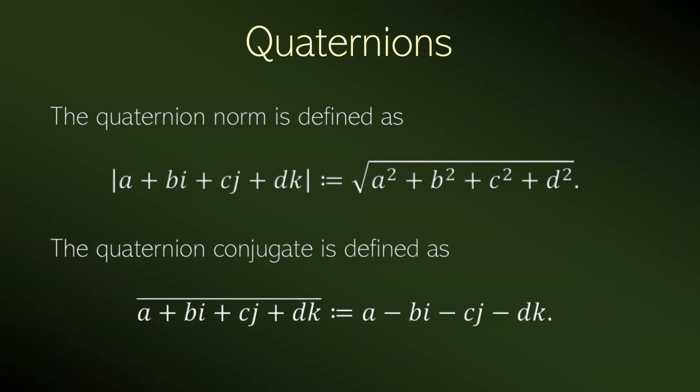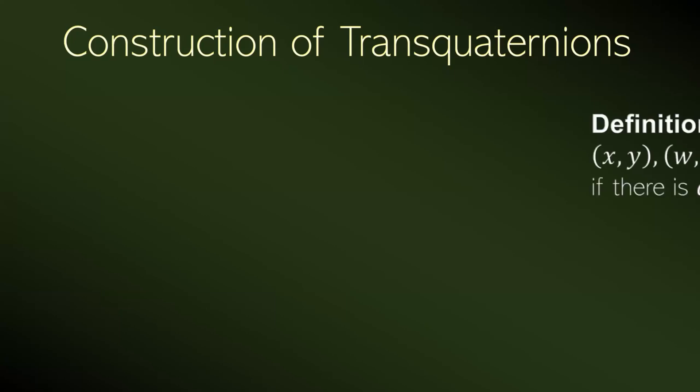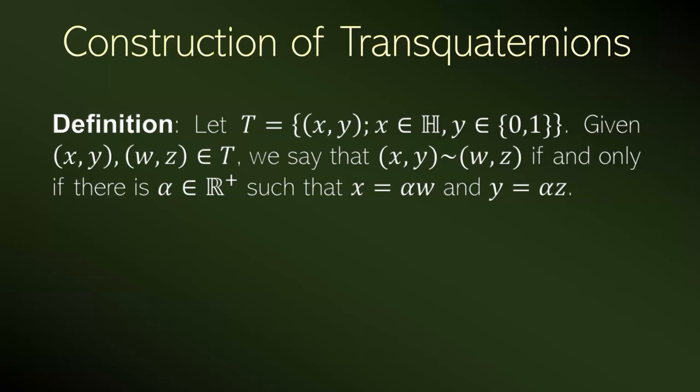Now we will see a construction of the transquaternions. It is similar to the construction of transcomplex numbers from complex ones — we construct the transquaternions from quaternions. We start by taking the set of ordered pairs, where the first coordinate is an ordinary quaternion number, and the second coordinate is a quaternion number that is specifically 0 or 1. And we define that two pairs relate to each other if there is a positive real number that is a common factor between the coordinates.